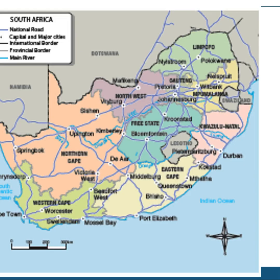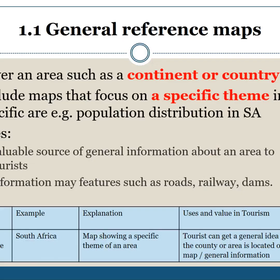What are the uses of reference maps? These are valuable sources of general information about an area to tourists. Information and features such as roads, railways, and dams are shown. In the curriculum table, the type of map is a general reference map — for example, South Africa — with the explanation being a map showing a specific theme of an area. Tourists can get a general idea of where the country or area is located on the map.